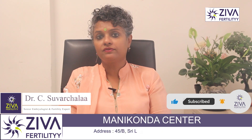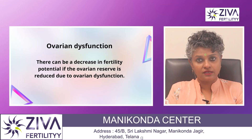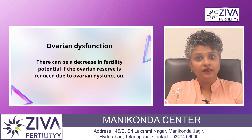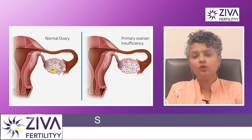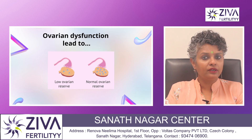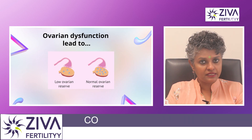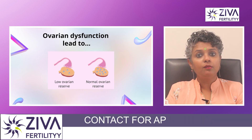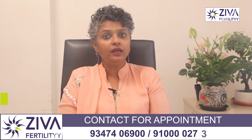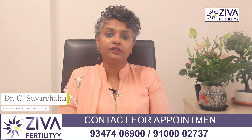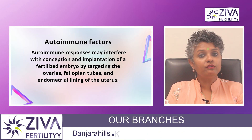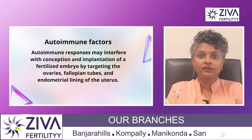There could be ovarian dysfunction as well. In some cases, lupus can affect the ovaries directly, leading to ovarian dysfunction. This can result in reduced ovarian reserve — the number of viable eggs remaining in the ovaries may come down — and decreased fertility potential is observed in such patients.